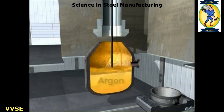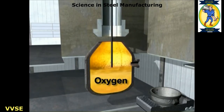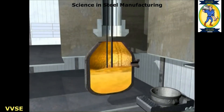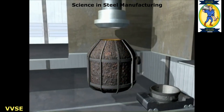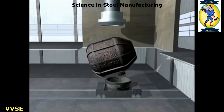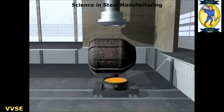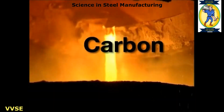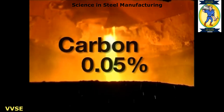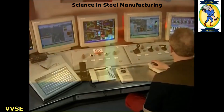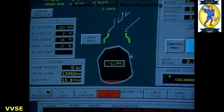Refining can be assisted by injecting argon, nitrogen or oxygen gases through the base of the vessel, and a sub-lance is used to measure carbon and temperature during the blow to allow final adjustments to be made. During tapping, alloy additions are also made to adjust steel composition. By this stage, the carbon has been reduced from around 4% to about 0.05%. Finally, the vessel is tipped to remove the slag for recycling.